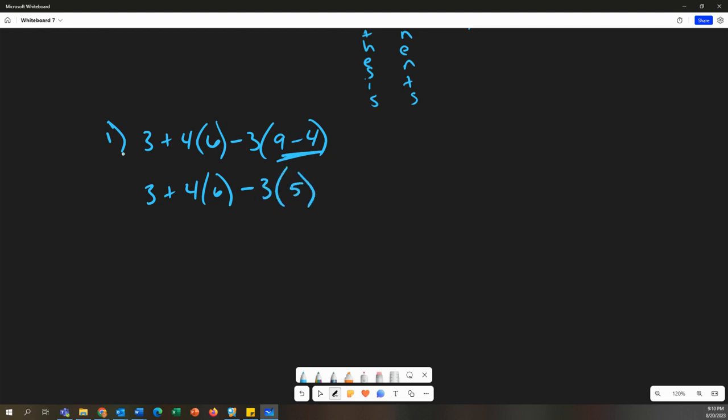Okay, that's done. I don't have any exponents. Multiply and divide. If I go from left to right, I'm going to multiply and divide as I go. So I have 4 times 6 and 3 times 5. This is really negative 3 times 5 if you want to look at it that way. Okay, now we can add them together and subtract.